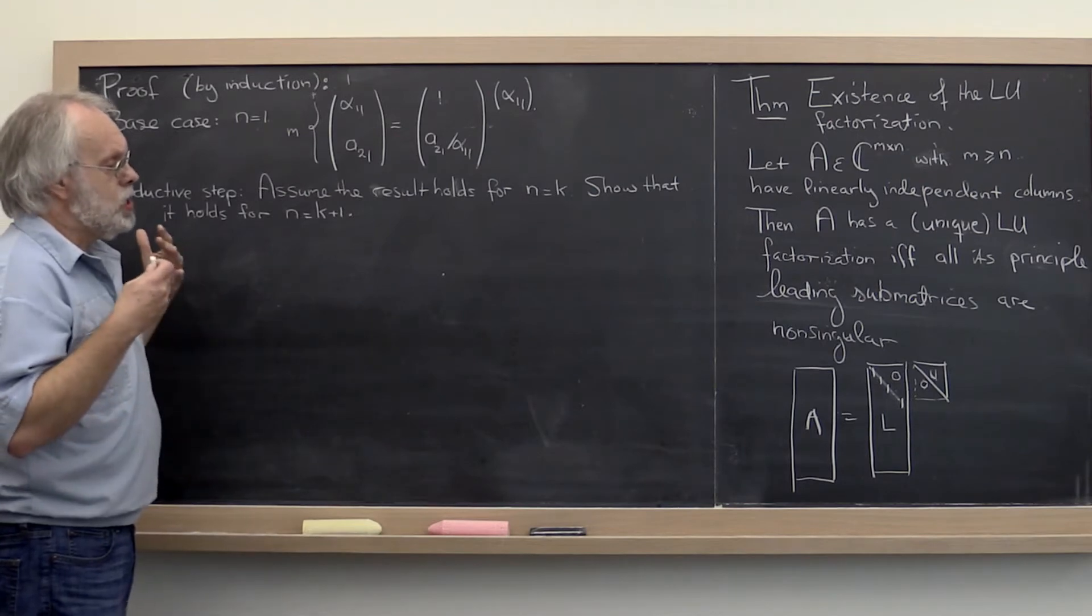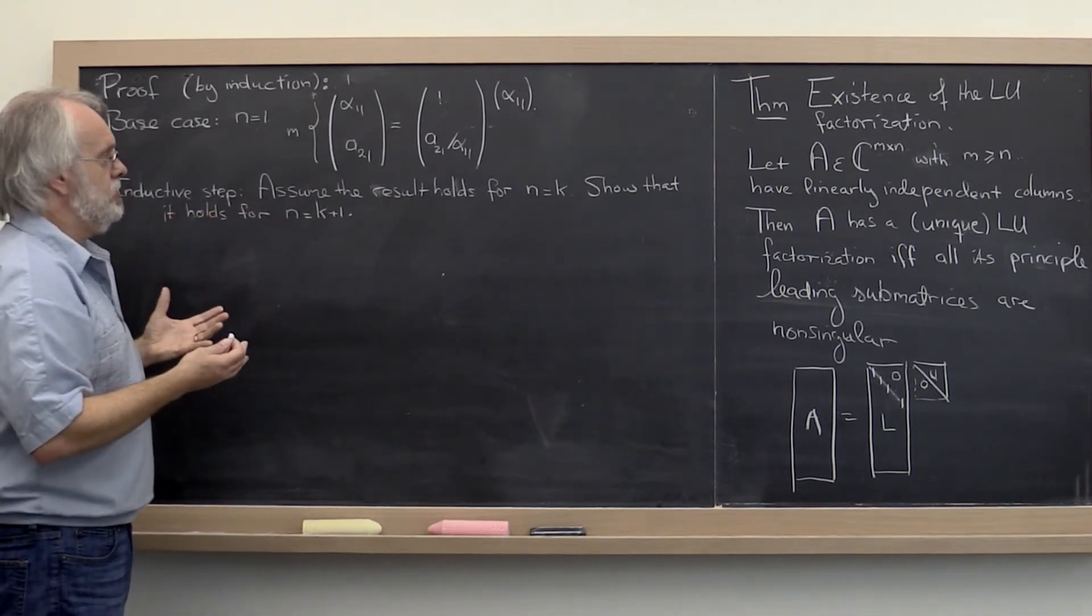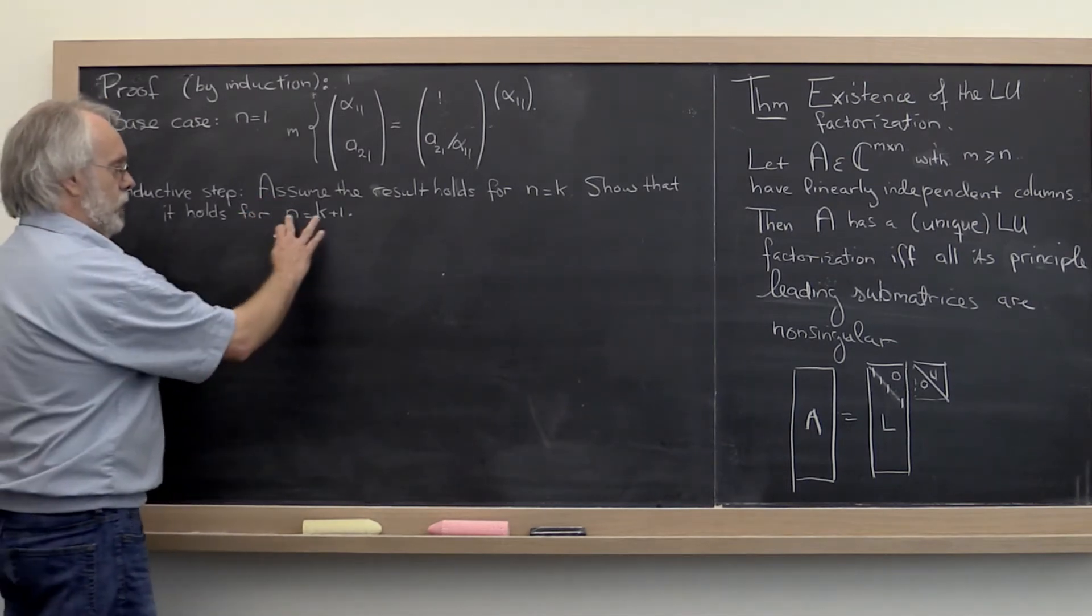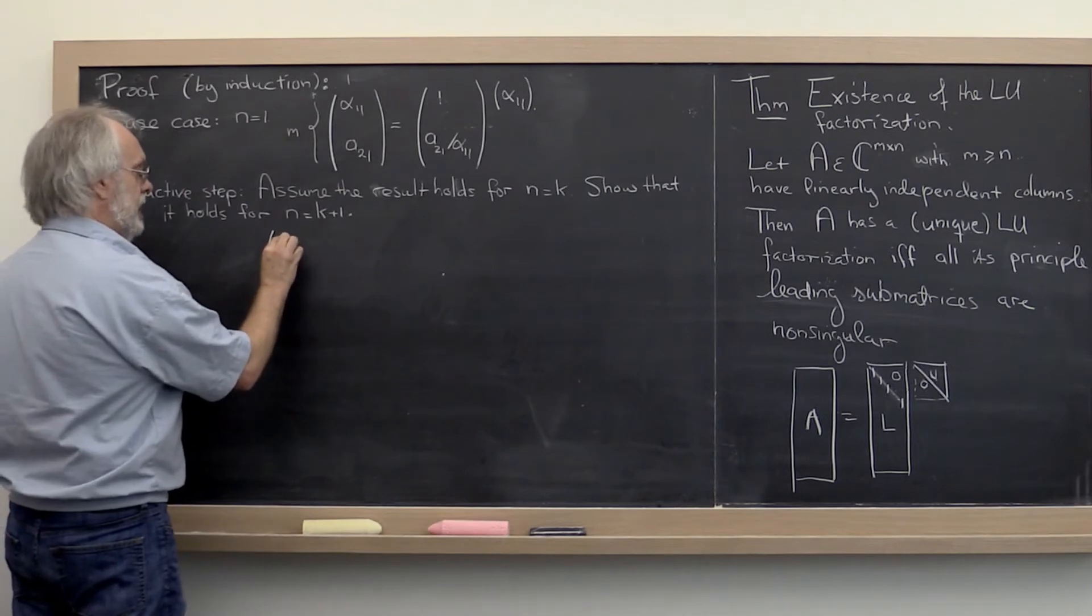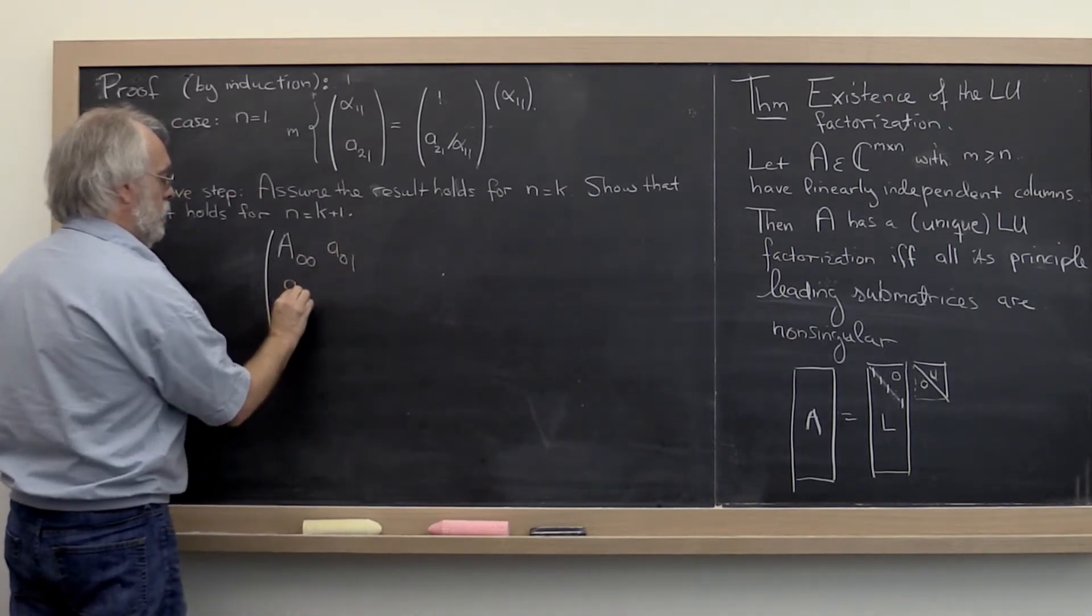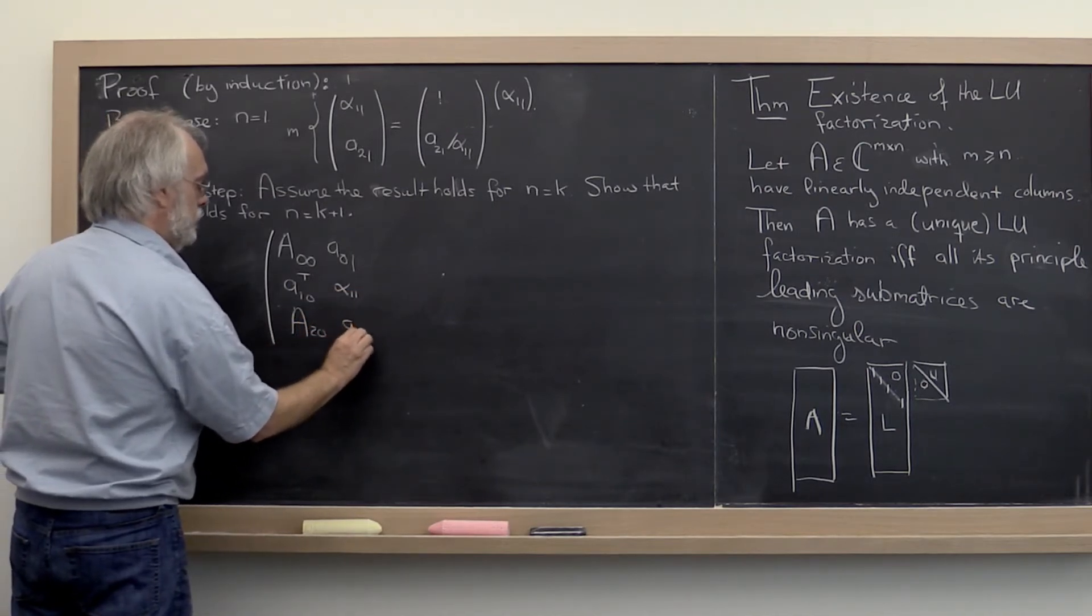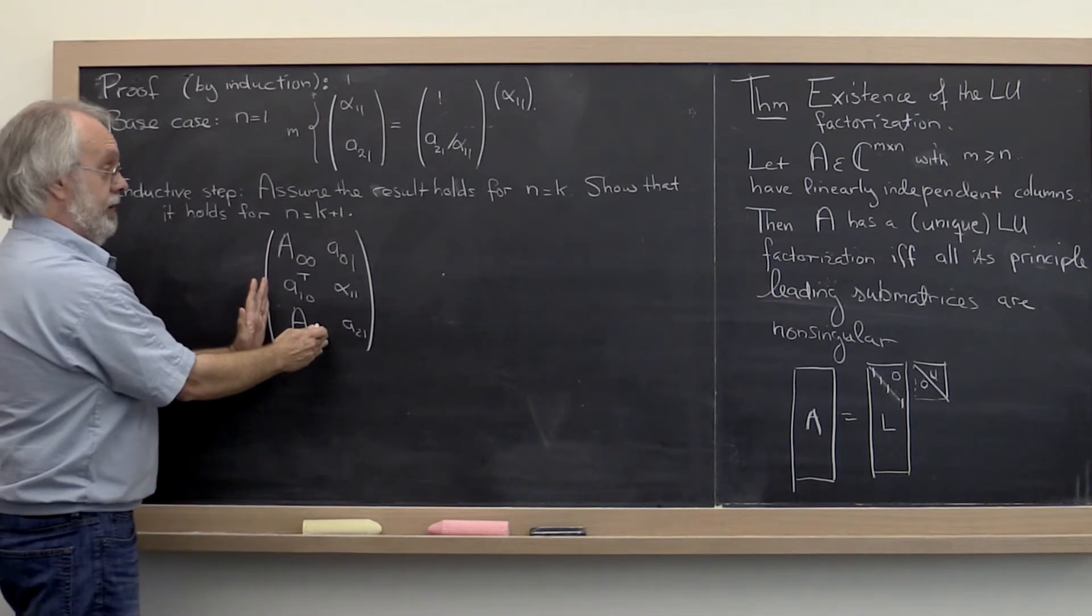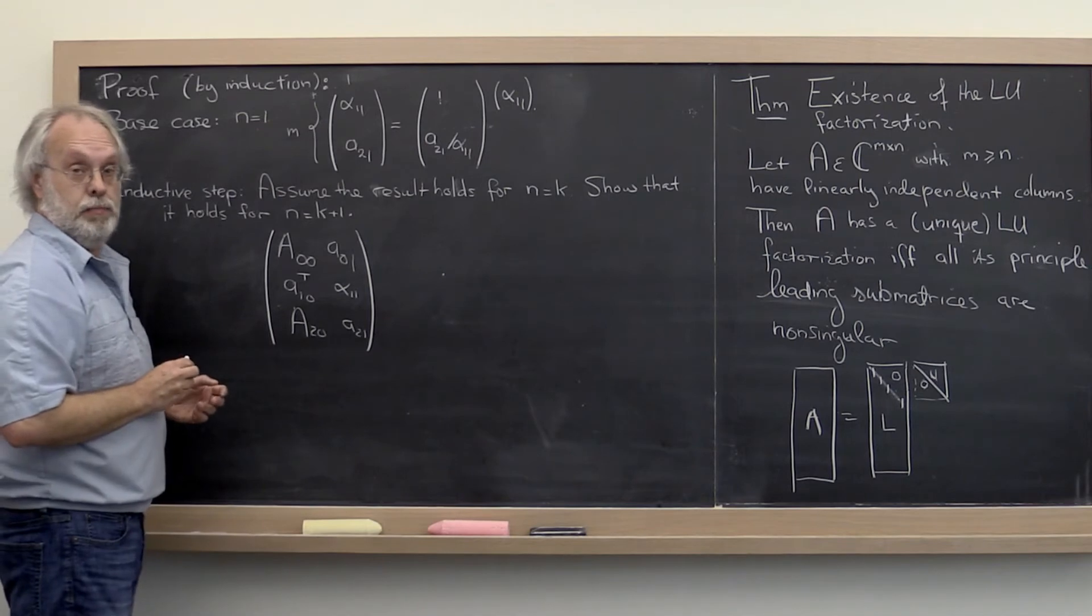Now here what we said is we'd like to expose what the structure of the matrix is and then work with it. And I'm going to do that here as well. So we have n equals k plus 1 columns. And the way I'm going to write my matrix A is A00, A01, A10 transpose, alpha11, A20, A21. So this constitutes the first k columns of the matrix. And this now is the last column.